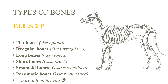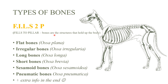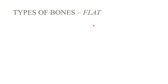F is for flat bones, I is for irregular bones, and so on. This combination means 'fills to pillar' — I know one L is missing but it's still understandable. It basically means that bones are the structures that help hold up the body, so that everything from skin to organs to muscles don't just fall apart. Bones are the pillars of our body.